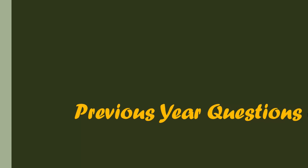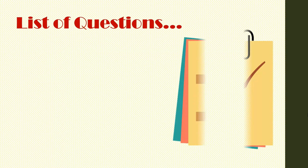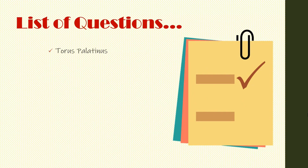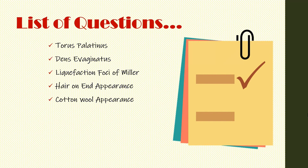Hey guys, and welcome to the Dentist Tab. In today's video we're going to discuss another set of previous year questions from oral pathology. Here's a quick view of the list of questions we're going to cover: the torus palatinus, dens evaginatus, liquefaction foci of Miller, hair-on-end appearance, cotton wool appearance, target lesions, Nikolsky sign, and bruxism.